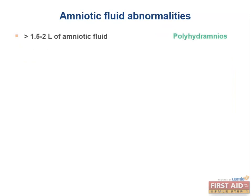Pelvic inflammatory disease is an important risk factor. You should have high suspicion for ectopic pregnancy in any woman of childbearing age with a history of infertility, salpingitis, or pelvic inflammatory disease — salpingitis being inflammation of the fallopian tubes — because adhesions can increase the risk of ectopic pregnancy. Regarding amniotic fluid abnormalities: greater than 1.5 to 2 liters of amniotic fluid is consistent with polyhydramnios, typically caused by the inability of the fetus to swallow amniotic fluid. This could occur with esophageal atresia, duodenal atresia, or anencephaly.